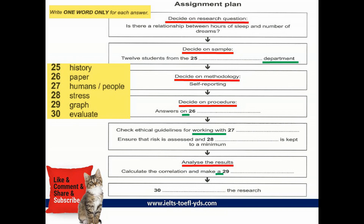Then, when we've collected all our data, we have to analyse it and calculate the correlation between our two variables — that's time sleeping and number of dreams. And then present our results visually in a graph. And the final thing is to think about our research and evaluate it. So that seems quite straightforward. Now let's get started.